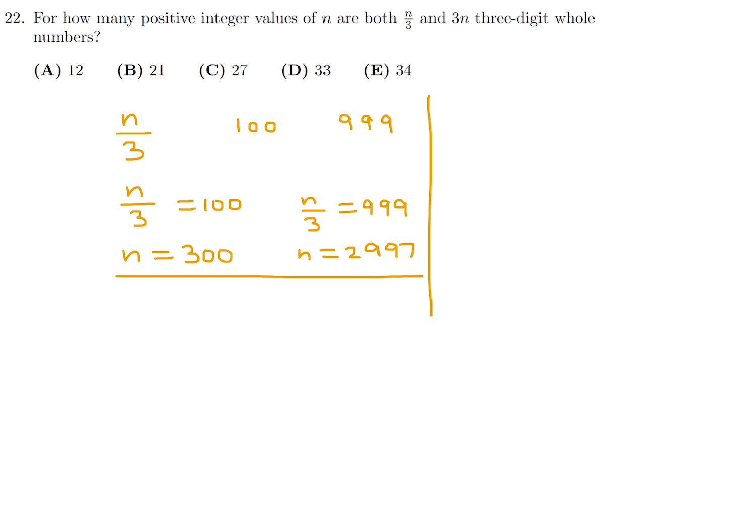But I also have to take into consideration 3n. So 3n again, same story. It's going to be a three-digit number. My minimum is 100. My maximum is 999. If 3n is equal to 100, n is going to be 33.3, but that's not an integer. So n has to be at least 34 in terms of an integer value. If 3n is equal to 999, then that means n is equal to 333.